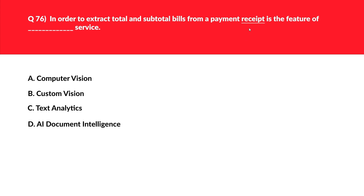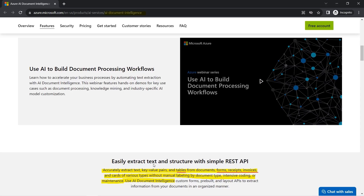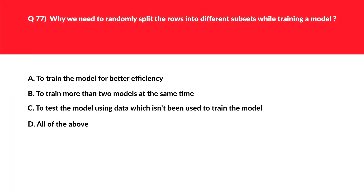We've encountered a similar question before. Just by looking at the keyword 'receipt,' you should already know the answer. Since the keyword is receipt, the correct answer is option D — AI Document Intelligence. We saw this in the official documentation earlier. We'll reject options A, B, and C, and lock option D as the correct answer.